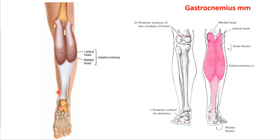The gastrocnemius muscle crosses both the knee and the ankle. Although it's usually referred to as an ankle muscle, it is a pretty powerful knee flexor with just as much moment for knee flexion as the hamstrings. The hamstrings have a greater range of motion over which they can contract, but both the hamstring group and the gastrocnemius — medial and lateral heads — work together to create knee flexion.